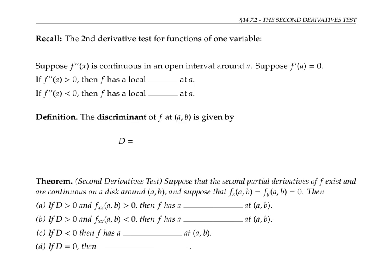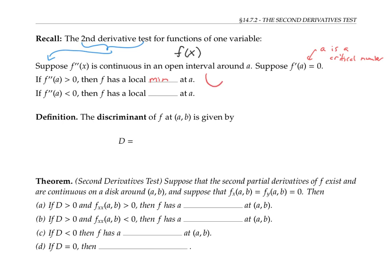In calculus one, we had a second derivative test for functions of one variable. Suppose we have a function f of x, and its second derivative is continuous in an open interval around the x value of a. Suppose also that f prime of a is zero — in other words, a is a critical number. Then if the second derivative at a is positive, f has a local minimum at a; it's concave up.